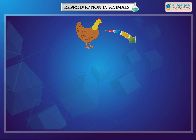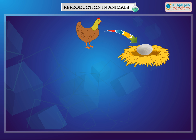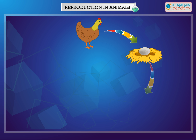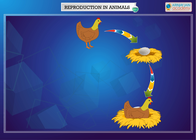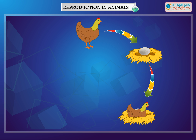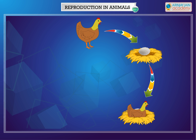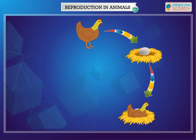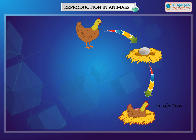The life cycle of a chicken has the following stages. The egg grows inside the hen. The hen lays her eggs in the nest. The hen sits on the eggs for a few weeks to keep them warm, because an embryo grows into a chick only when it is warm. This is known as incubation.